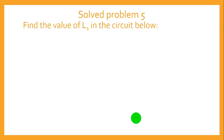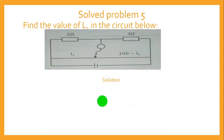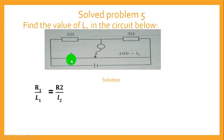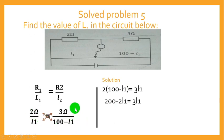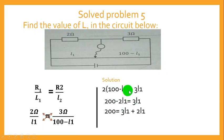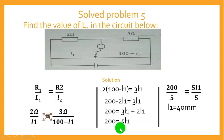The fifth question: Find the value of L1 in the circuit. Using the formula R1 over L1 equals R2 over (100 minus L1), we substitute: 2 over L1 equals 3 over (100 minus L1). Cross-multiplying: 2 times (100 minus L1) equals 3 times L1, giving 200 minus 2L1 equals 3L1. Collecting like terms: 200 equals 5L1. Dividing both sides by 5 gives L1 equals 40 mm.